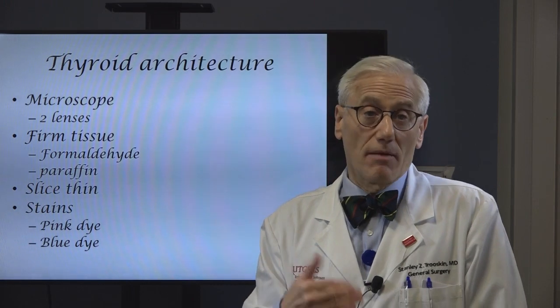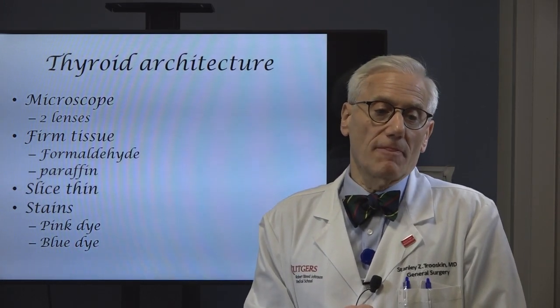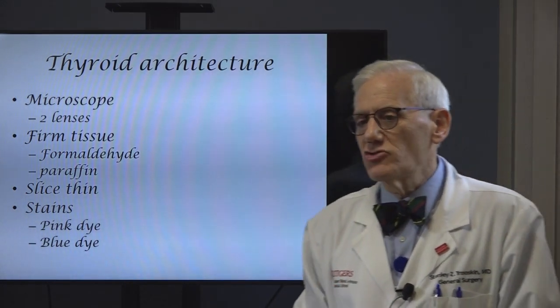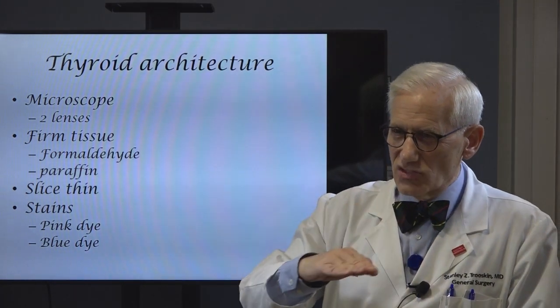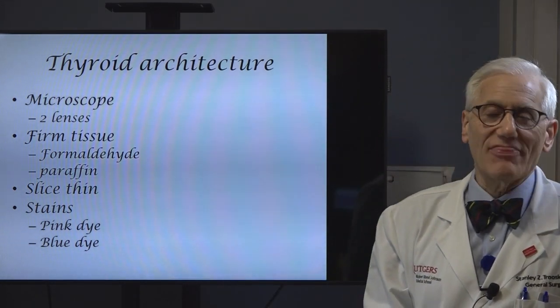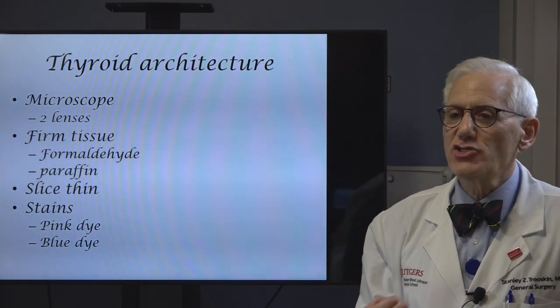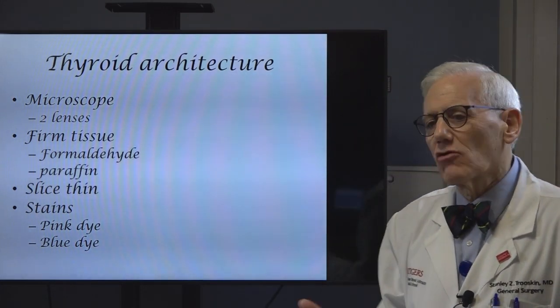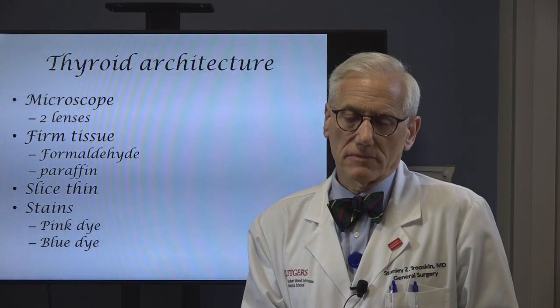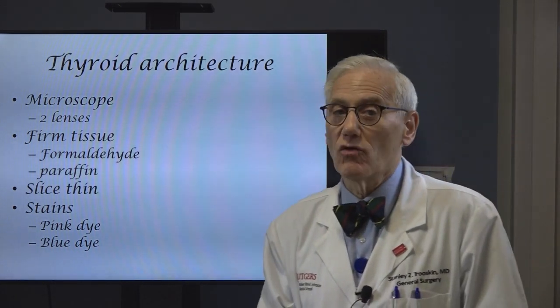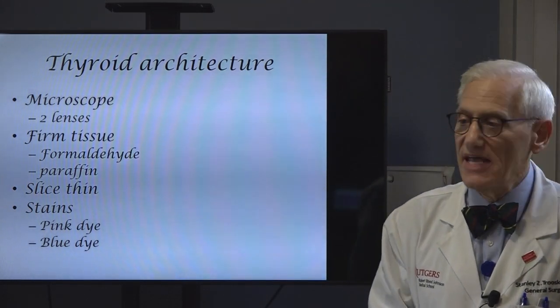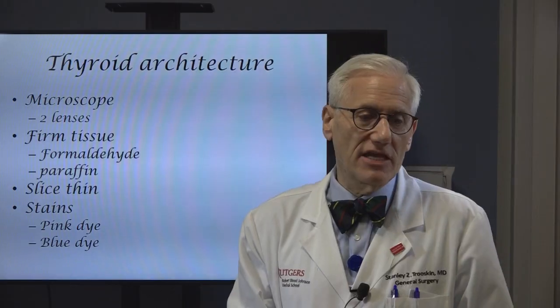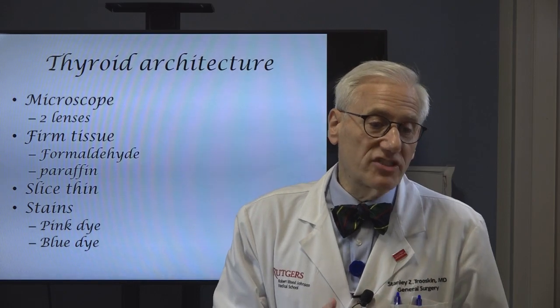Every organ in the body has a particular architecture, and we know this because of a microscope. In a microscope there are two lenses — one near the eyepiece, one further down — and a light source at the bottom. To look at tissue under the microscope, the tissue has to be sliced incredibly thin so you can see light through it. The way that's done is it's placed in formaldehyde overnight, put into wax or paraffin, and a very sharp blade called a microtome will slice it so thin you can actually see light through it. Then stains are put on it to bring out the details, either a pink stain or a blue dye.